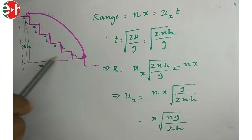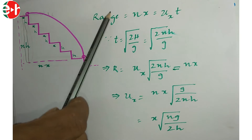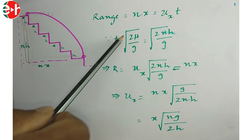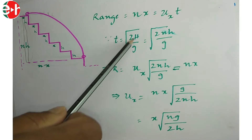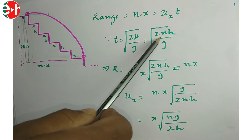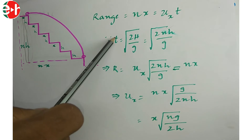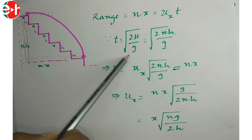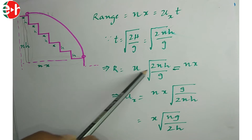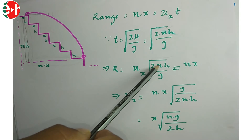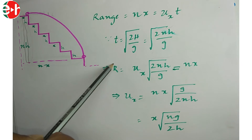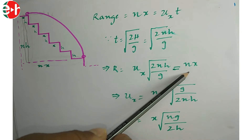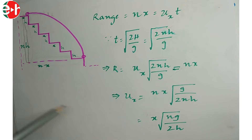With range = n·x and height = n·h, using range = Ux·t where t = √(2·n·h/g), and substituting R = n·x, simplifying for Ux gives the required initial velocity formula.